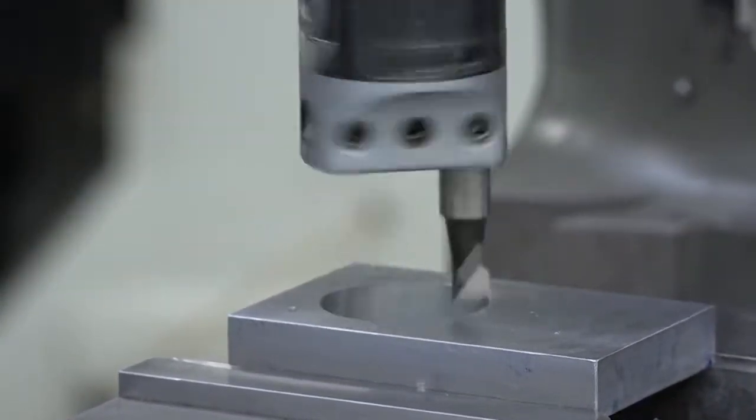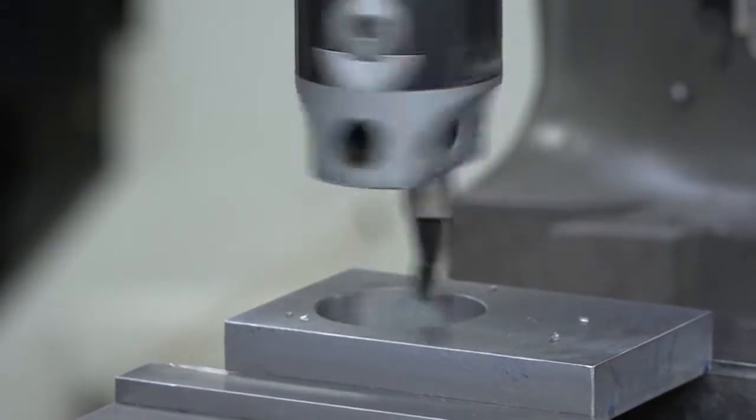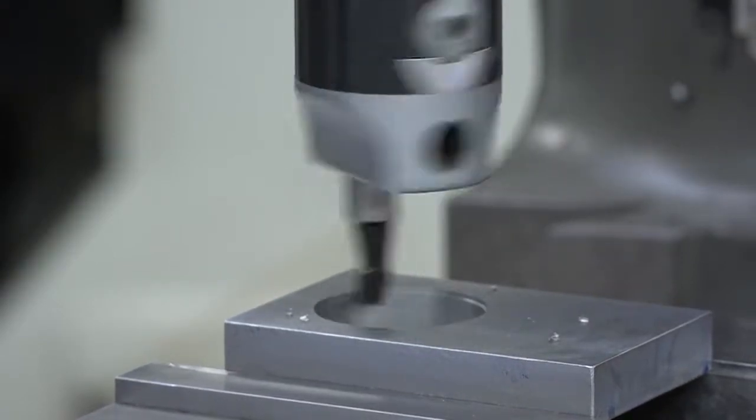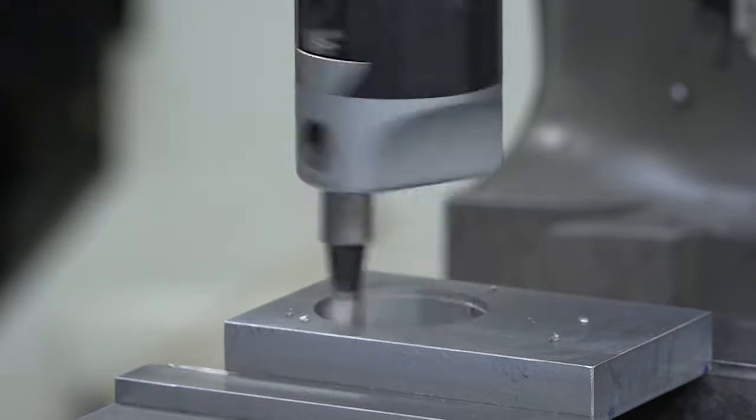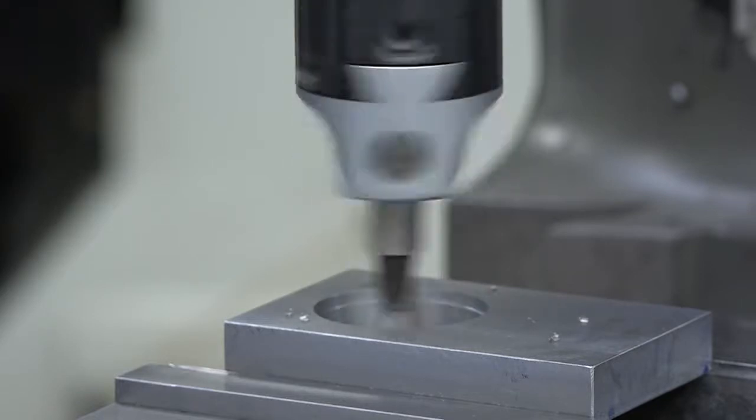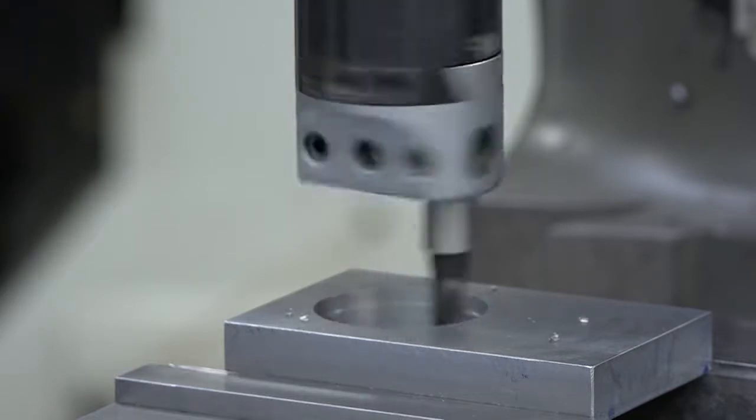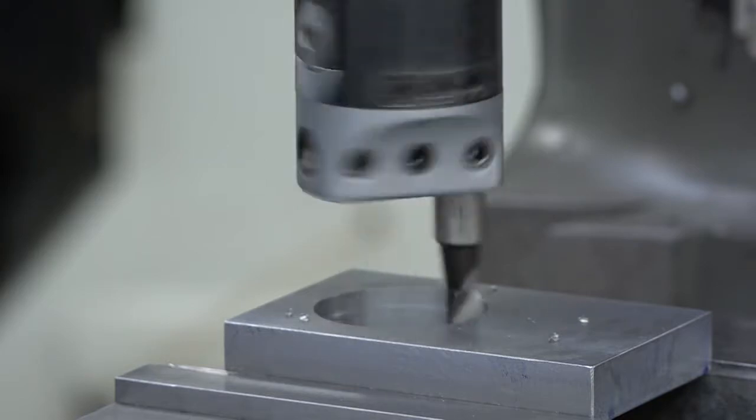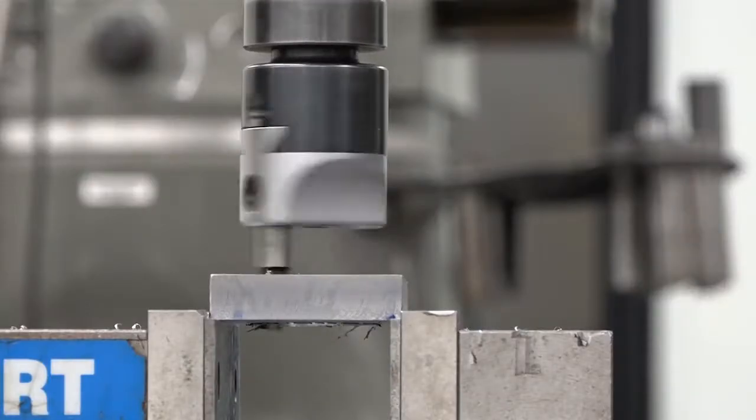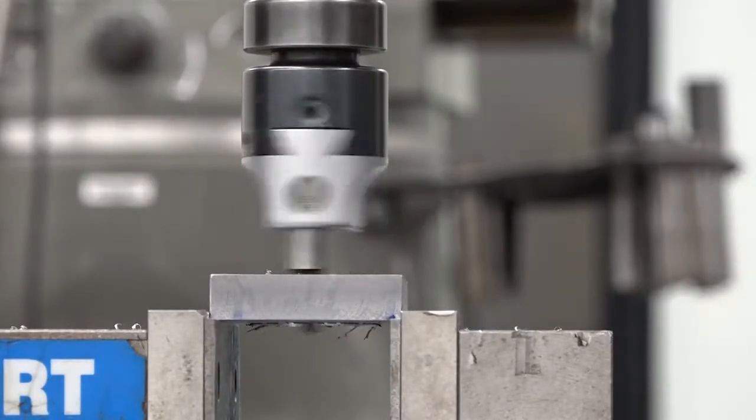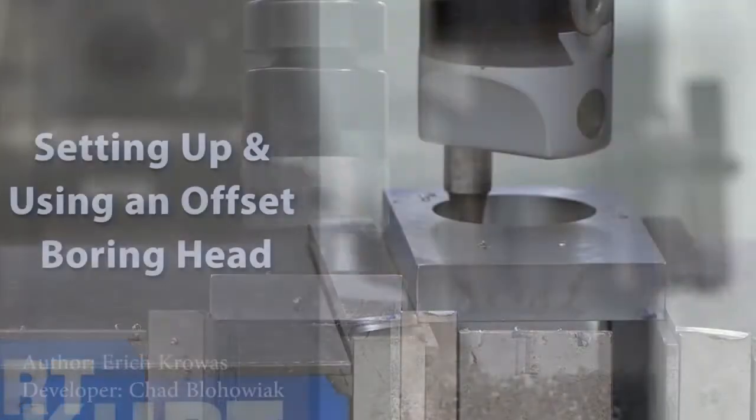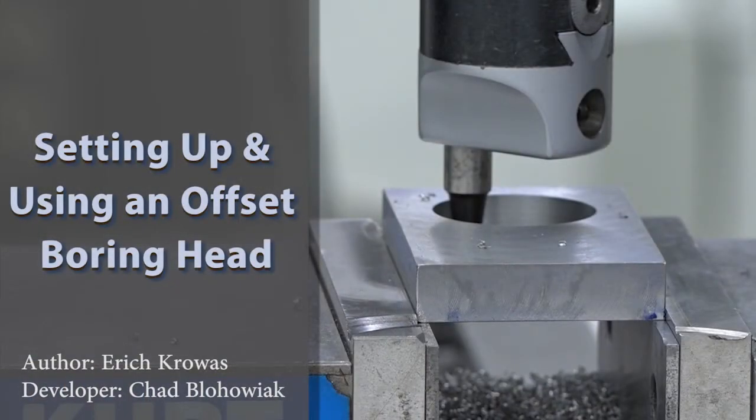Adjust the boring head by the calculated amount. Make another cut on the part and measure the diameter again. Calculate the remaining stock and repeat the previous two steps until you have bored the hole to the correct size. You've completed boring using a boring head.